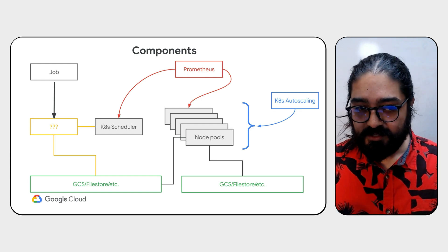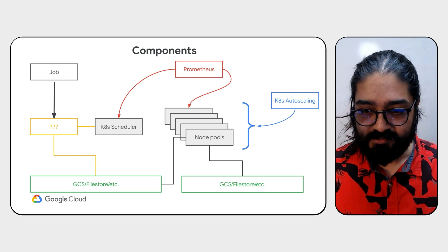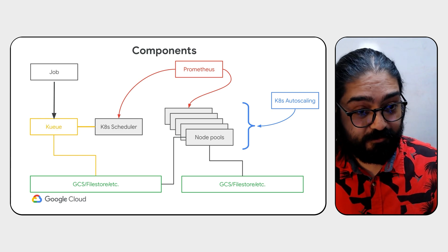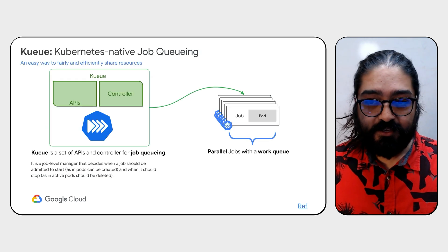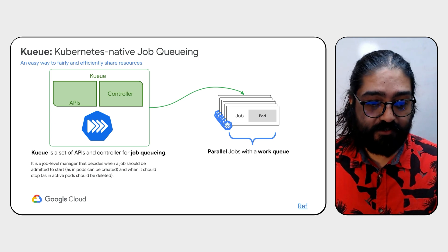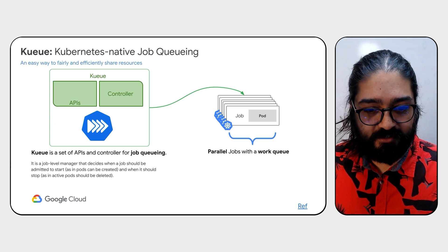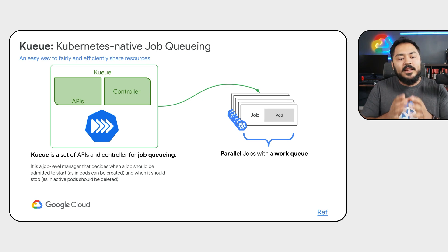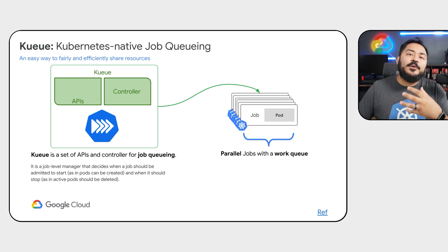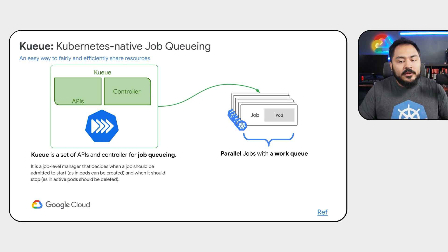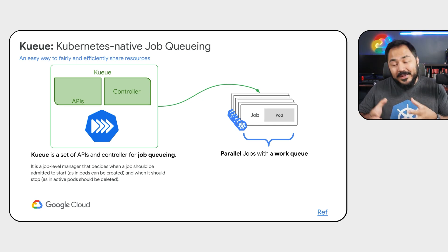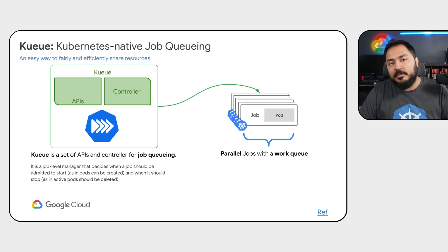Now, the only thing that's really missing is a job queuing system. Enter Kueue. Kueue is a Kubernetes native job queuing system. In Kubernetes, we have a set of controls to handle when a job should be scheduled, but these are not as well defined as we need to handle a batch platform like we are trying to build here.